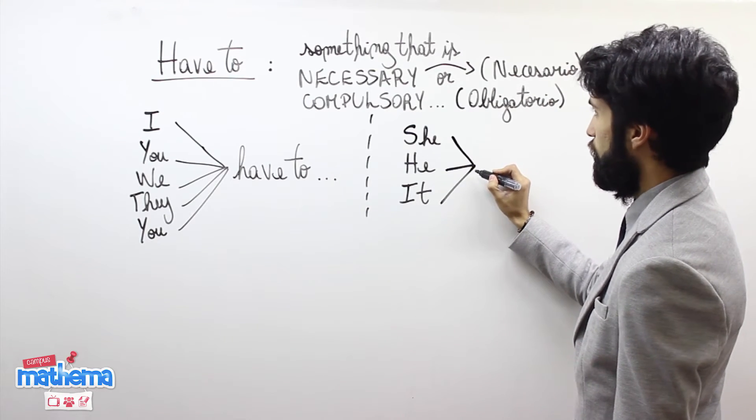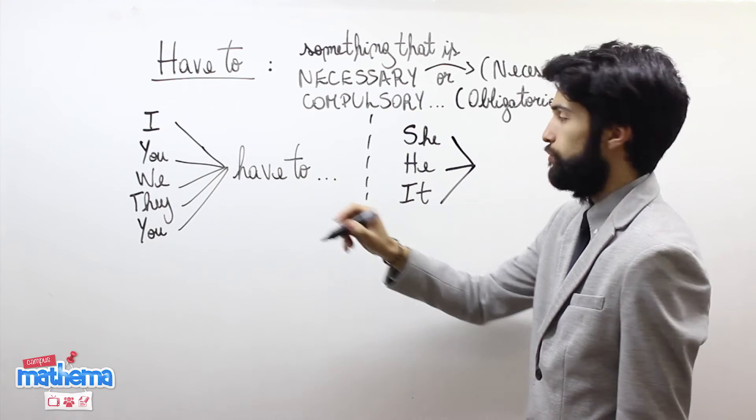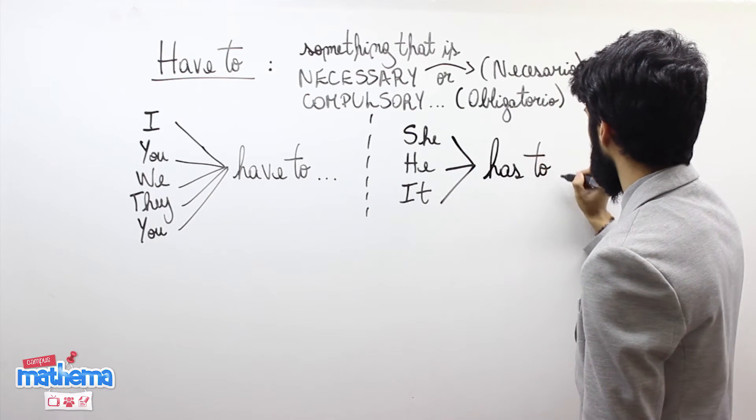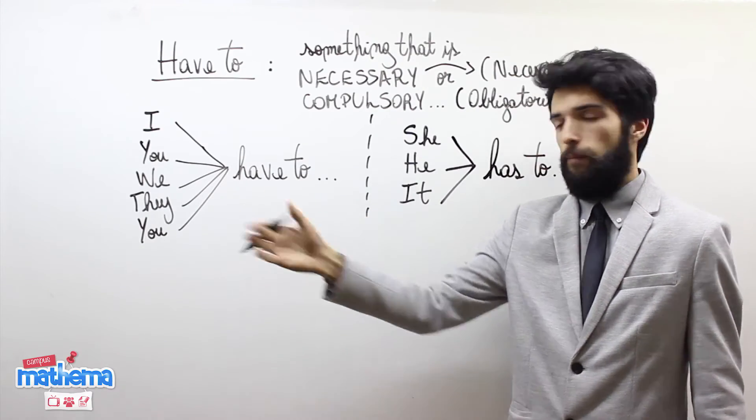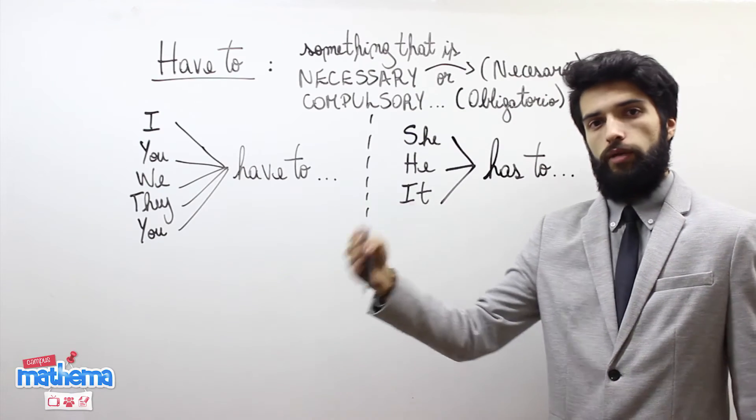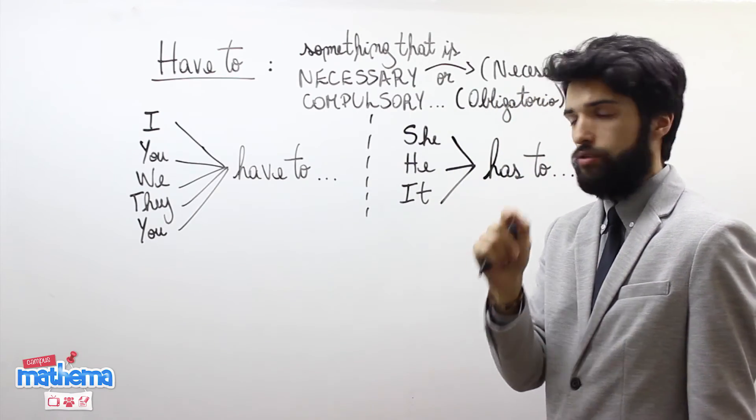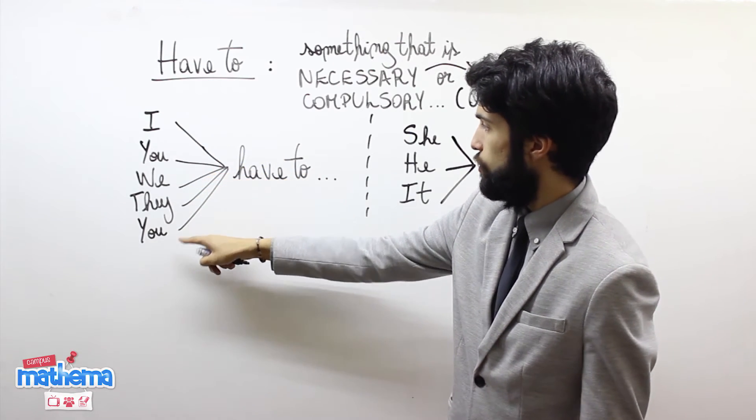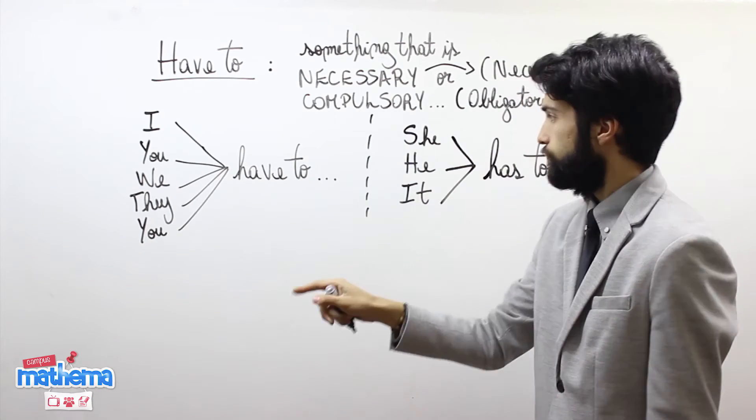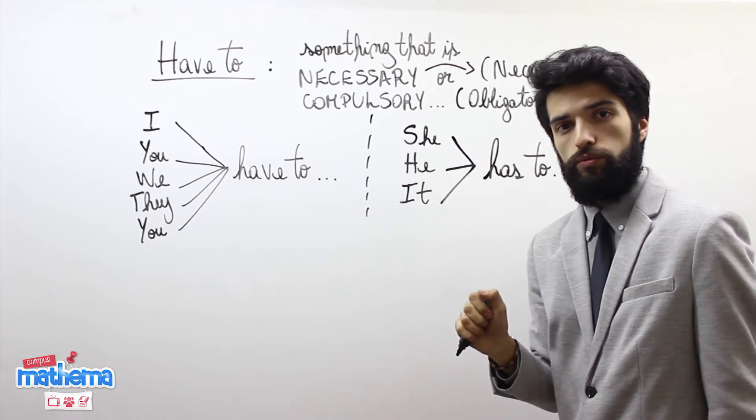Y aquí está la diferencia donde todos alguna vez caímos en nuestra vida. She, he, it no va seguido de have to. Va seguido de has to. She has to blah blah blah. He has to blah blah blah. It has to blah blah blah. Tienen que tener ojos con eso. I, you, we, they, you have to. Nunca has to. Nunca. Y por otro lado, she, he, it has to.